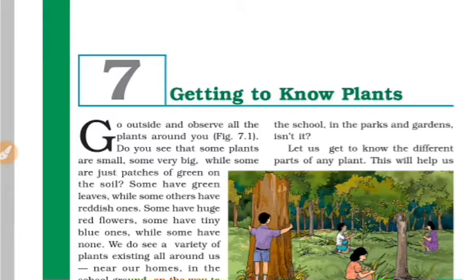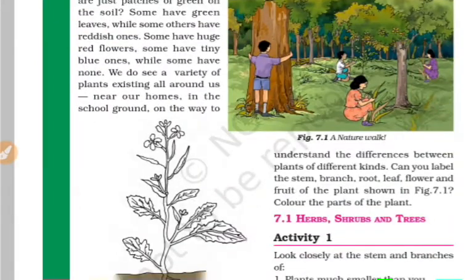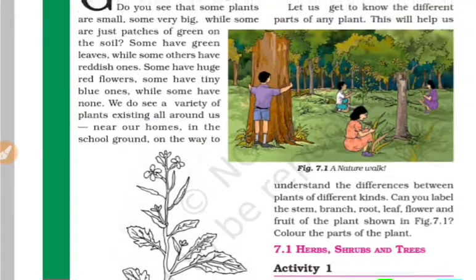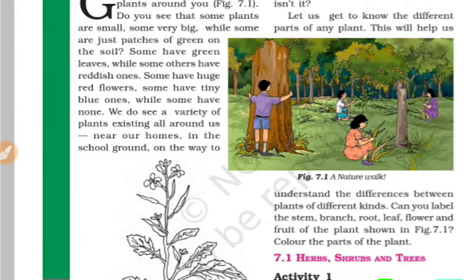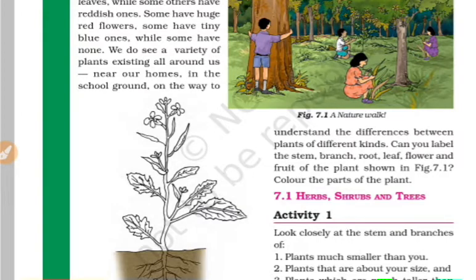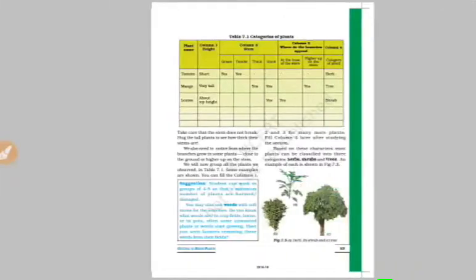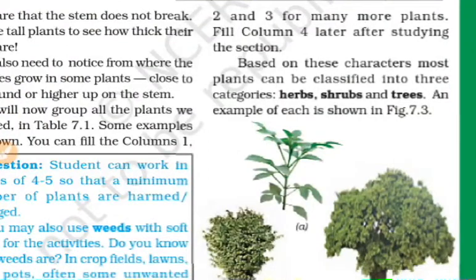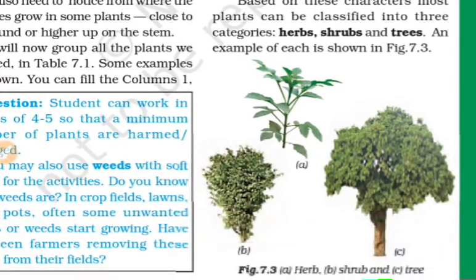In the 6th standard, we are going to talk about botany. The first topic covers three plants in different categories: herbs, shrubs, and trees. Here are the diagrams showing these three plant types.